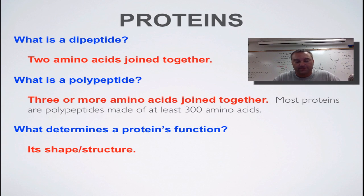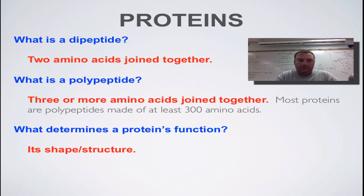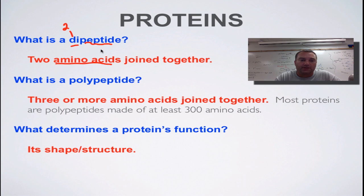Let's begin with something a little bit easier. If you recall from an earlier screencast, we talked about monomers, polymers, and dimers, and how they were all built together through dehydration synthesis — an anabolic process — and then how they would be broken down through hydrolysis, which is a catabolic process. We're just going to apply that knowledge to proteins. We want to start off with a dipeptide. 'Di' is a prefix that simply means two, and 'peptide' refers to amino acids, so a dipeptide simply means two amino acids joined together.